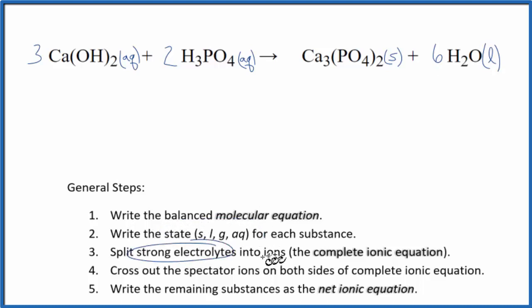Now we're going to split the strong electrolytes into their ions, and it'll give us the complete ionic equation. So calcium group 2 forms 2+ ions. The hydroxide ion, that's always 1−. So I have 3 calcium ions. And then I have 3 times the 2. So then I have 2 of these hydroxides times 3. So I have a total of 6 hydroxide ions. I'm not going to write the states for each one right now. Let's do that at the end.